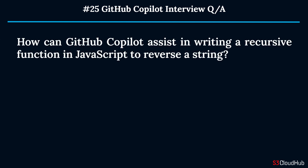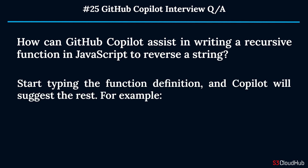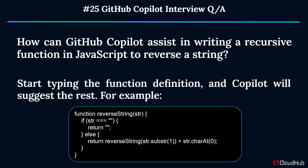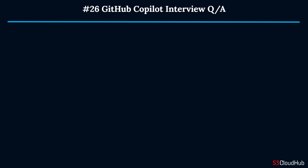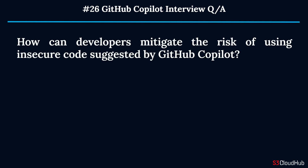Question twenty-five: How can GitHub Copilot assist in writing a recursive function in JavaScript to reverse a string? Start typing the function definition and Copilot will suggest the rest.